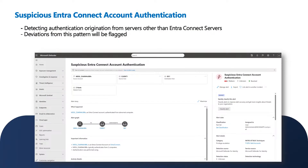The next alert is: suspicious EntraConnect account authentication. The ADDS account is a very sensitive user, and we're not supposed to see any authentication originating from servers other than the EntraConnect server. So if we detect any authentication not originating from the EntraConnect server, we will raise an alert. And if someone signs into the EntraConnect server itself, we already have that previous alert to cover that scenario.